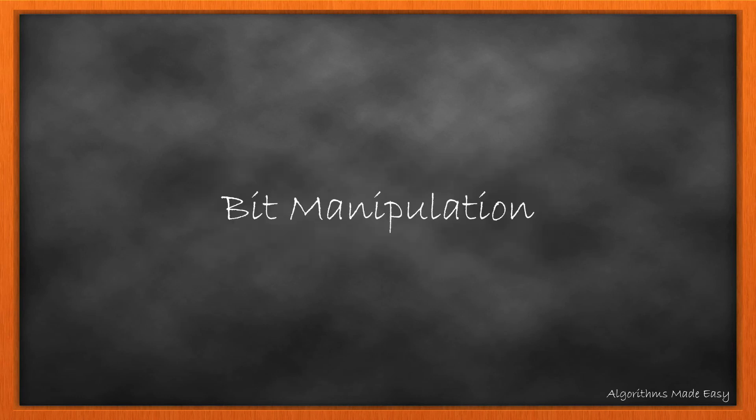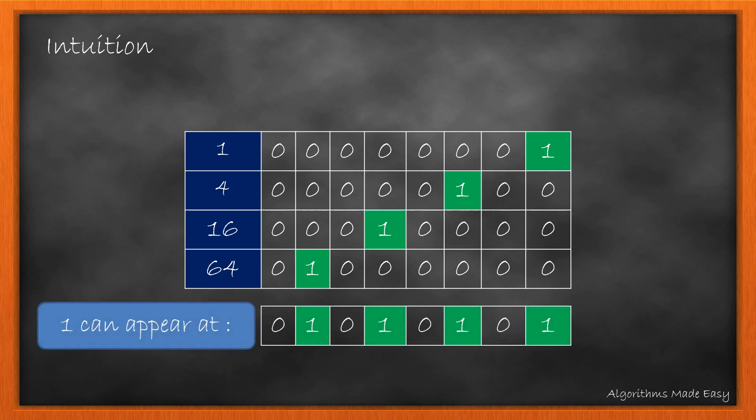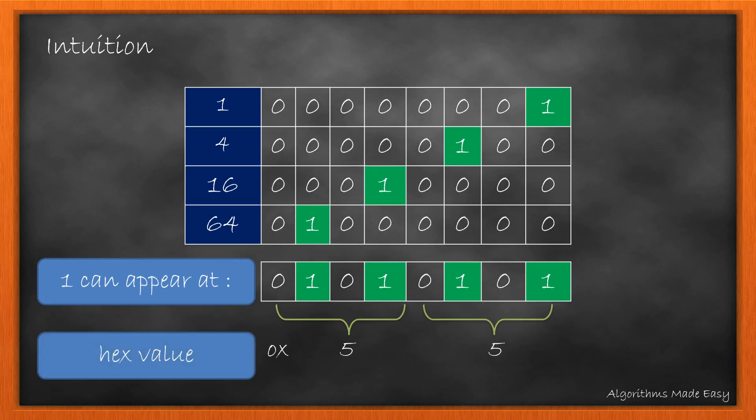Let's go through the third approach, the bit manipulation. If we write down the numbers in binary representation, we see that power of 4 consists of only one set bit. So, if we see for 8 bits, we can have 1s in these bits. The hex value of this is 55.